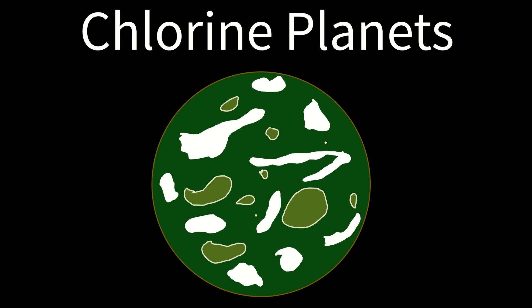How could this be? Well, to understand the answer, we have to delve into why these planets should be so rare in the first place. Normally, chlorine is quite rare in the universe due to the Otto Harkins rule and its high mass. But on chlorine worlds, the element is quite abundant. How could this be?